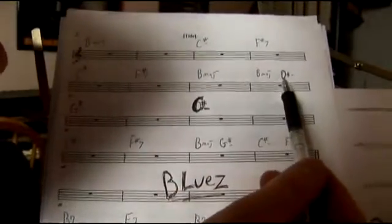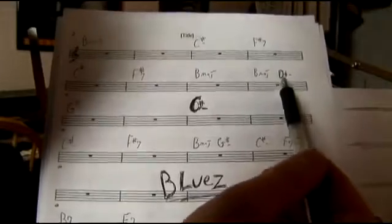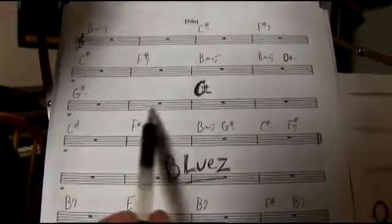And then we have that for a measure and a half. And then we go to D sharp minor, which is our three minor, right? B, C, D. So we go three. Then we land on six minor. And we walk six for two measures.